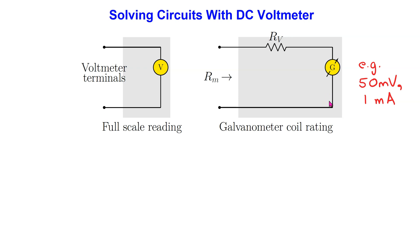This also means that if we were to use the galvanometer on its own as a voltmeter, the maximum voltage it can measure is limited to its voltage rating, which is very small. To expand the full-scale range, we connect a resistor Rv in series with the coil.